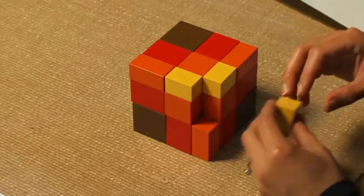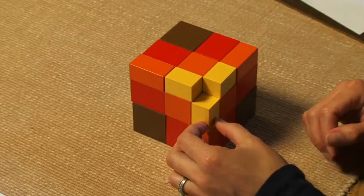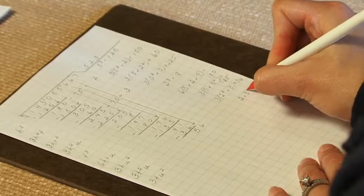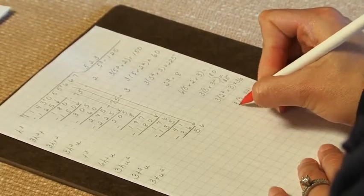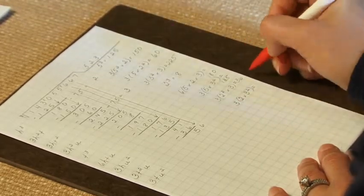Or we have 2 times 3 squared, 3 times. And that is equal to 54.